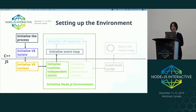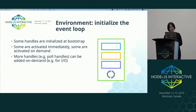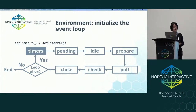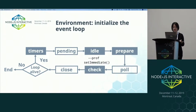After the runtime-independent components are initialized, we then move on to set up the event loop. At this point, we need to initialize a few handles — some are activated immediately, some are activated on demand later. We only initialize a fixed number of handles during bootstrap; more handles, specifically the ones for I/O, are added on demand later. The libuv event loop has many different phases in each iteration. At bootstrap, we'll initialize one timer handle for setTimeout and setInterval, one idle handle for setImmediate, one prepare handle for idle notification for --prof, and one check handle for --prof and another for setImmediate to pair with other handles to work.